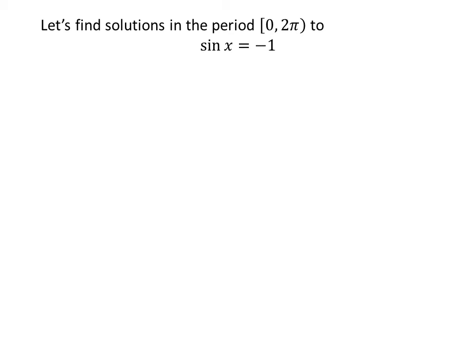Now let us find the solutions to the equation sine of x is equal to minus 1 in the period 0 to 2 times pi. We know the value of sine of 3 times pi upon 2 is minus 1.